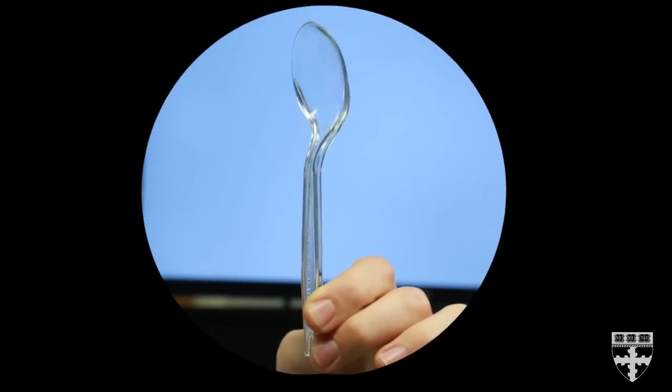This is a spoon. This is a spoon seen through the lens of one of the world's smallest polarization cameras, designed by researchers at the Harvard School of Engineering.